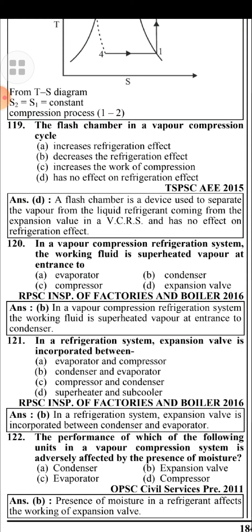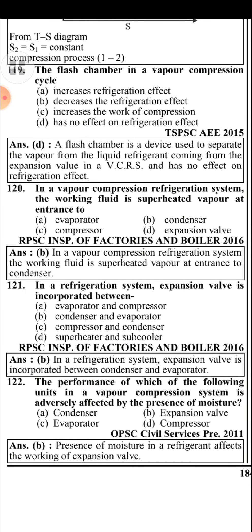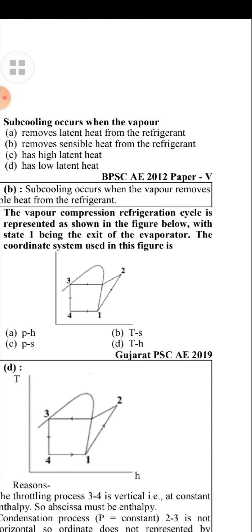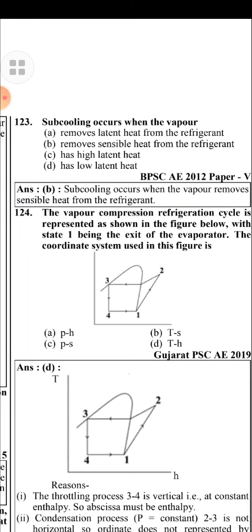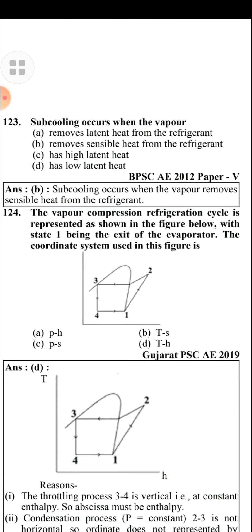In a vapour compression refrigeration system, the working fluid is superheated vapour at the entrance to the condenser. In a refrigeration system, the expansion valve is incorporated between the condenser and evaporator. The performance of the expansion valve in a vapour compression system is adversely affected by the presence of moisture, as moisture affects the working of the expansion valve.